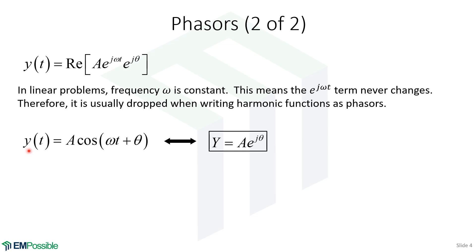So in the end, given some function y of t equal to A times cosine of omega t plus theta, in phasor form we would write it as capital Y — using a capital letter to remember this is a phasor and not the original function — equal to A times E to the j theta, where theta is the phase. We're not writing the real operation, and we're not writing the E to the j omega t. This is the phasor representing our cosine function.